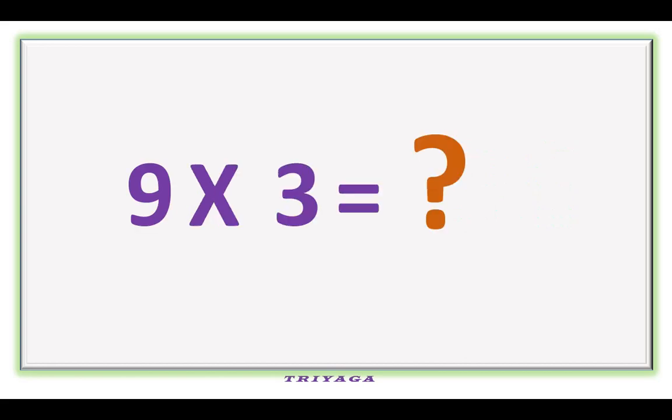9 times 3 is how much? It is 27. 9 times 8 is how much? It is 72.